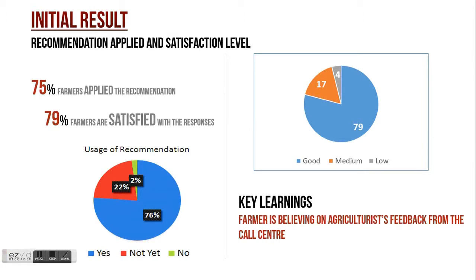We also studied the satisfaction level of farmers. 76% of farmers said that they applied the recommendation coming from the agriculture call center through the Farmer Query System (FQS), and 79% of those farmers were satisfied with the support and recommendations. Farmers are believing in feedback from the call center because they know that information is backed by an agriculturist in the system. Previously they had to go to input sellers or extension agents, who are not agriculture experts — that's why they are interested to use this system.